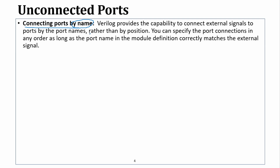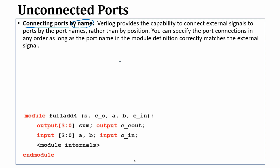By name, we can connect to the other module. This is the example: S and C_O are two output ports, and A, B, C_in are the input ports. Output is sum and cout, and inputs are A, B, C_in. This is the same example we have used previously. The internal operations are not our focus here — we are interested in the port connections.